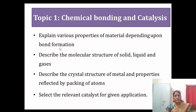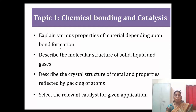This course is divided into three topics. The first topic is chemical bonding and catalysis. After completing this topic, the learner will be able to explain various properties of materials depending on bond formation. The bonds covered include electrovalent bond, covalent bond, coordinate bond, metallic bond, hydrogen bond, and van der Waals forces. Depending on that bond formation, various properties of materials can be explained.